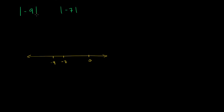When you take the absolute value of a number, you're really asking how far that number is from 0, whether it's to the left or to the right. Negative 9 is 9 to the left of 0, so the absolute value of negative 9 is exactly 9. Negative 7 is exactly 7 to the left of 0, so the absolute value of negative 7 is positive 7. Comparing 9 and 7 is straightforward — 9 is clearly greater than 7.